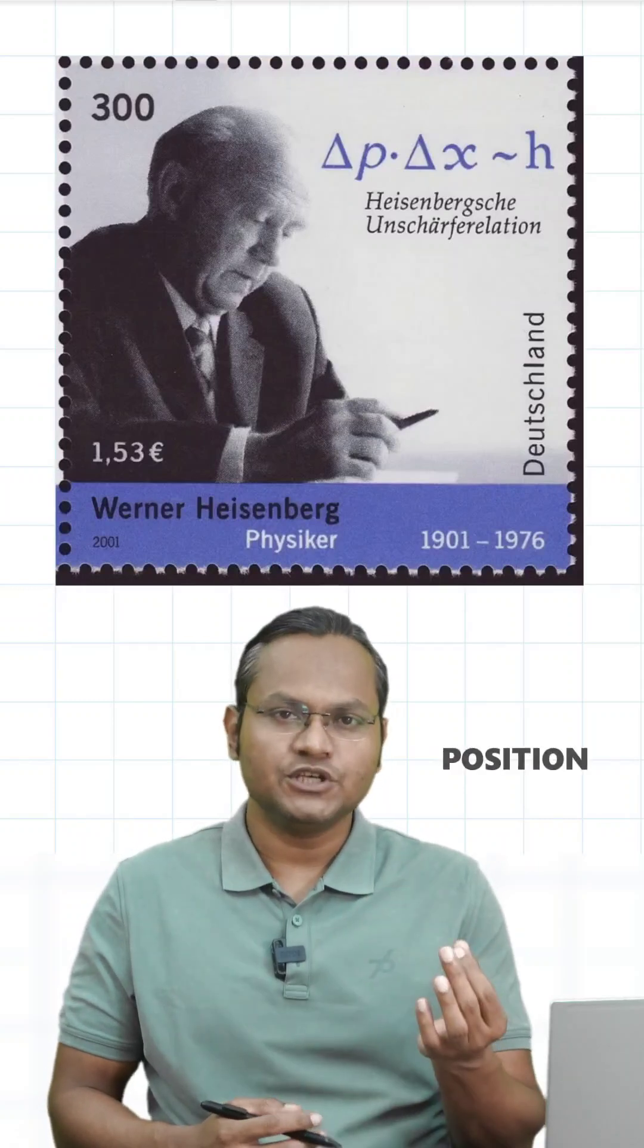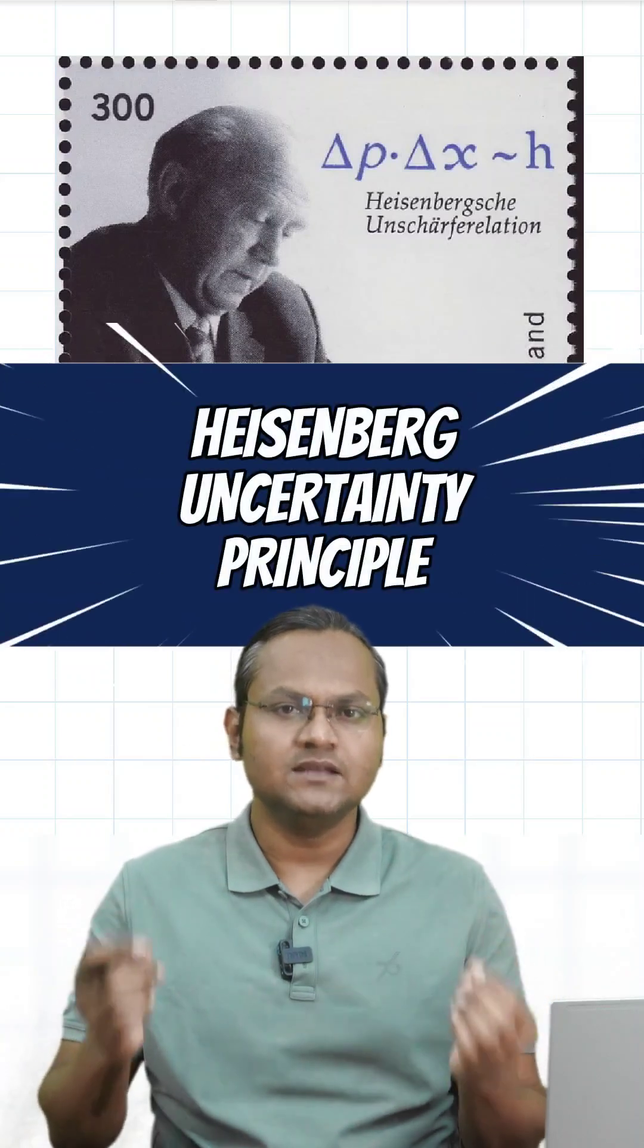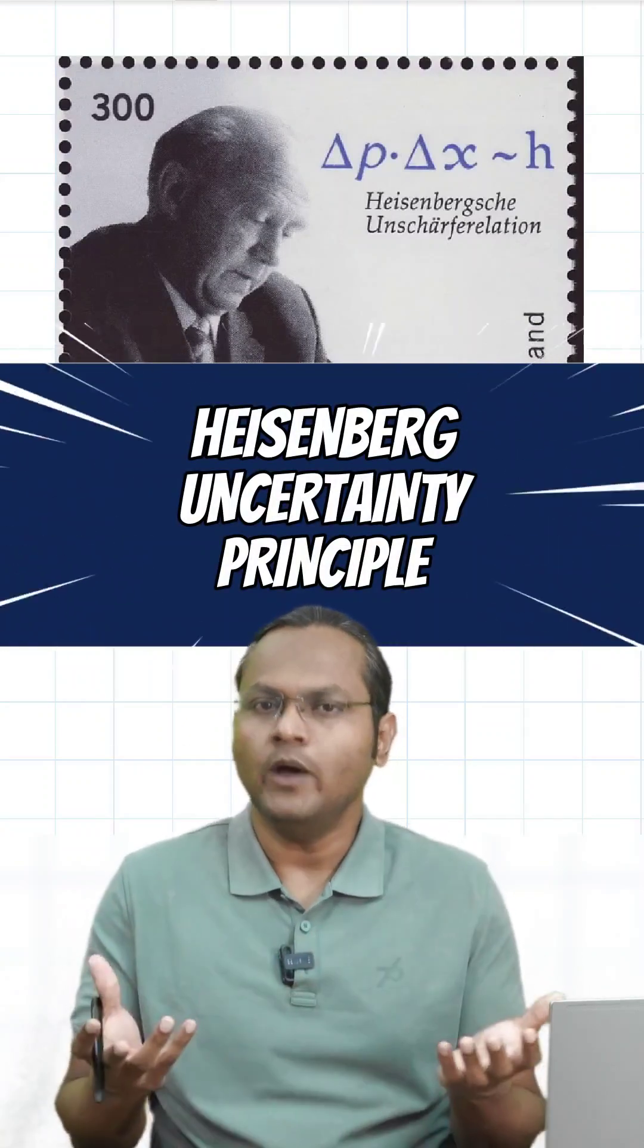Quantum mechanics में हम particle के position और velocity को accurately measure नहीं कर सकते हैं. This is called the Heisenberg Uncertainty Principle. लेकिन ऐसा क्यों है?